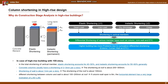If we look at the case of a high-rise with 100 stories, in the total shortening of vertical members, elastic shortening accounts for 40-50% and inelastic shortening accounts for 50-60% generally. Concrete columns usually have a shortening of 2-3 millimeters per story, so the shortening at the roof is about 200-300 millimeters. The shortening of a wall is about 1 millimeter per story, and the shortening at the roof is about 100 millimeters. Therefore, the differential shortening between column and wall is about 100-200 millimeters at the roof, meaning that when the span between column and wall is 8 meters, it has a very large inclination of L/40 to L/80.